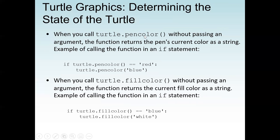When you call turtle.pencolor() without passing an argument, the function returns the pen's current color as a string. An example in an if statement: if turtle.pencolor() equals 'red' — in Python we use two equal signs to check equality — and the pen color is red, we want to change it to blue: turtle.pencolor('blue').